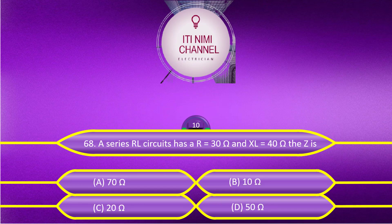A series RL circuit has R = 30 ohm and XL = 40 ohm. The impedance Z is: Option A, 70 ohm; Option B, 10 ohm; Option C, 20 ohm; Option D, 50 ohm. The answer is Option D, 50 ohm.